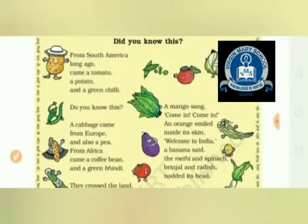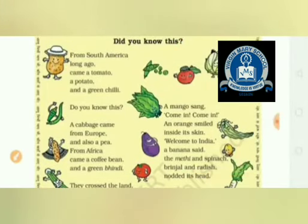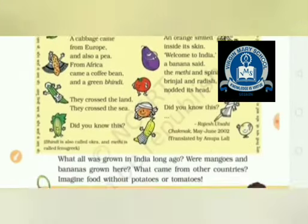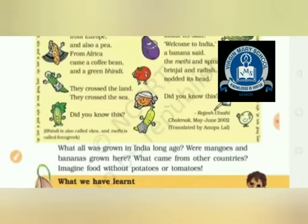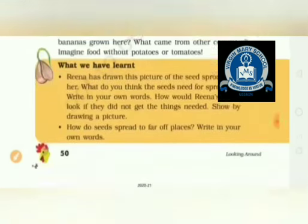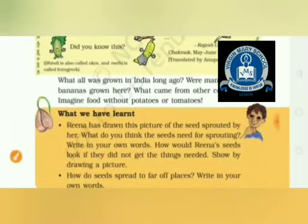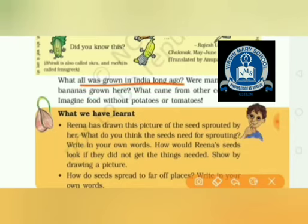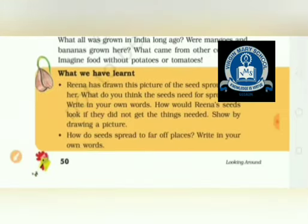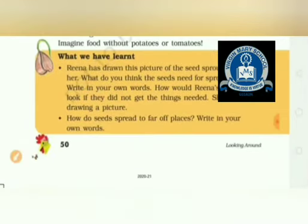Tomato, potato, chili, cabbage, coffee, bhindi, and chai — these were not always grown in India. They were introduced from other countries.